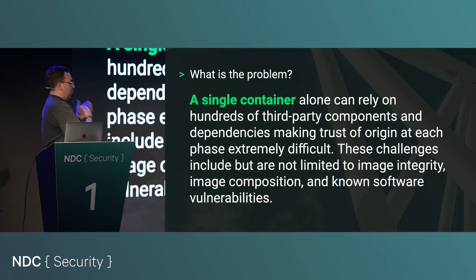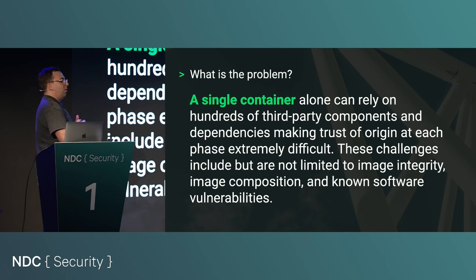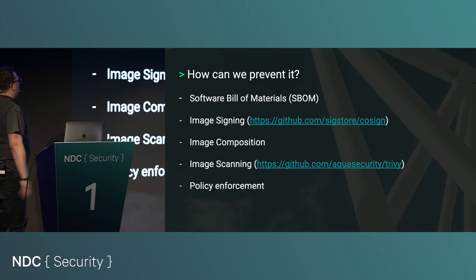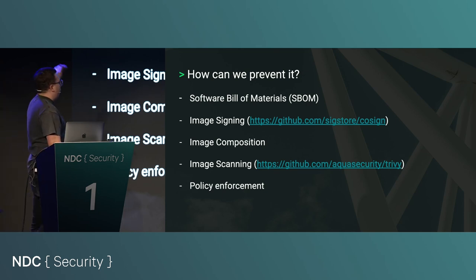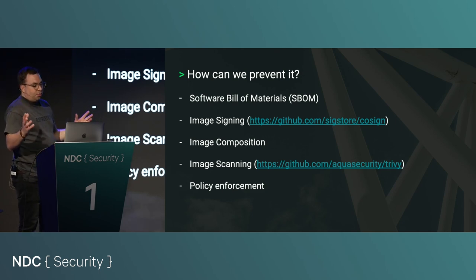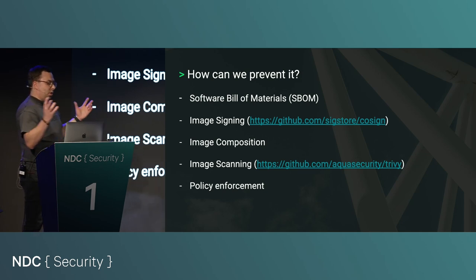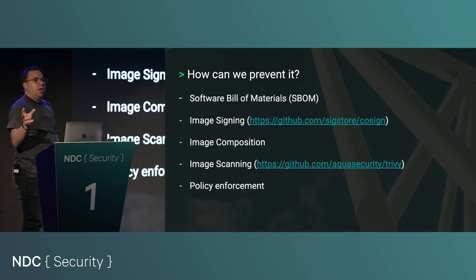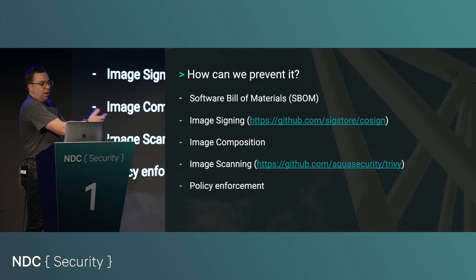We also need to make sure images we pull are actually the images we created. Just because you tag an image as 1.2.3 doesn't mean a week later that tag still points to your image — tags are ephemeral. You can upload a new image with the same tag and overwrite the previous one, so the next person pulls a bitcoin miner instead of your application. To prevent this, we can perform a Software Bill of Materials — an SBOM defines all components that make up your build. You can also sign your images and validate that signature on pull.